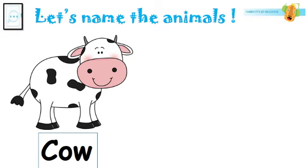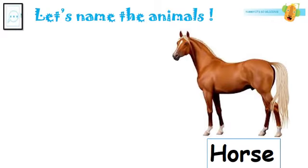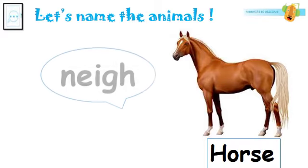And this is a cow. The cow makes the sound moo. This is a horse. A horse makes neigh sound.